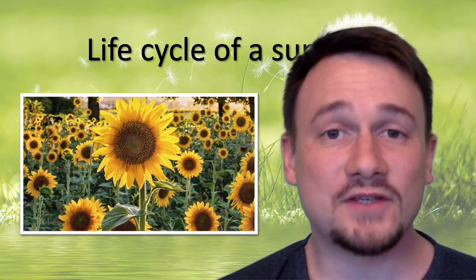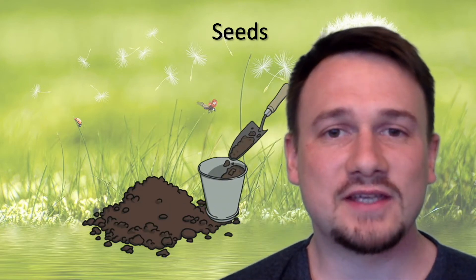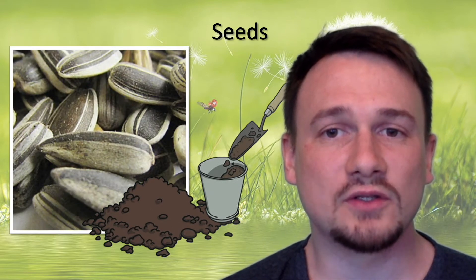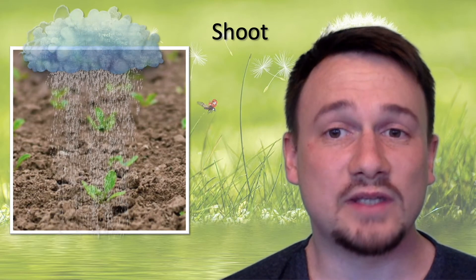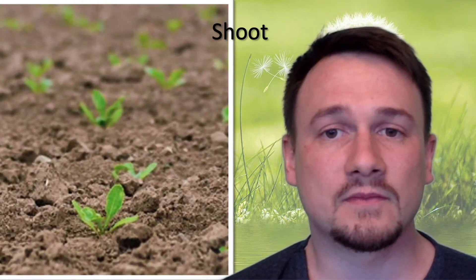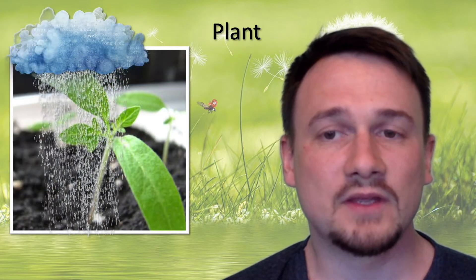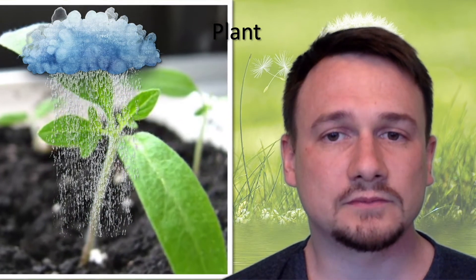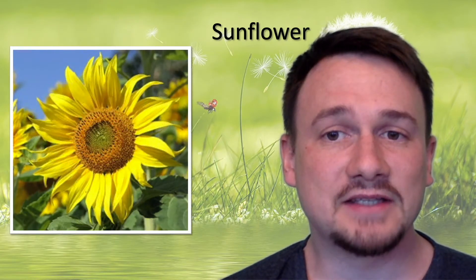Let us now look at the life cycle of a sunflower. The first thing we need to do is to dig a hole in the ground and plant the sunflower seeds. Seeds need soil to grow. After a while, the shoots come out of the soil. And when it rains, the shoots become bigger and bigger. The plant then grows up, and when it rains more, the plant continues to grow bigger and bigger, until the sunflower opens and it is grown up.